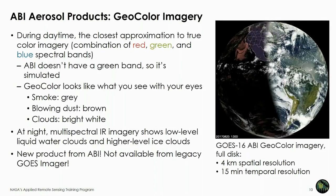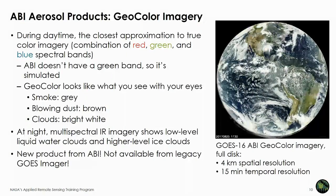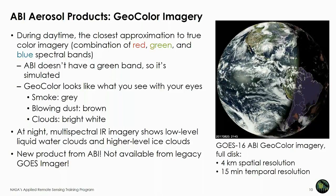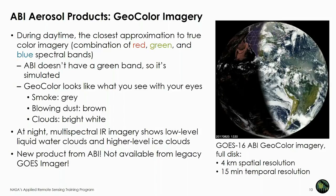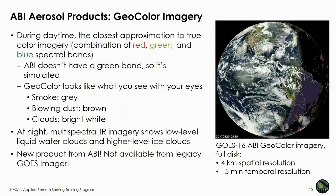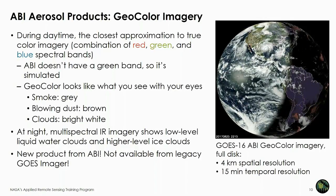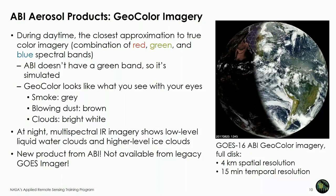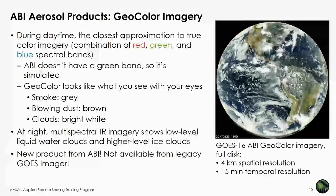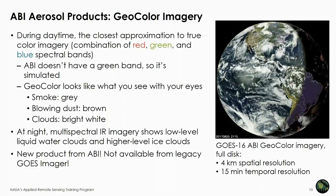Here's an example of GOES-16 ABI geocolor imagery from August 25th, 2017, with four kilometer spatial resolution and 15-minute temporal resolution — a new product from the ABI we didn't have before. On this day, Hurricane Harvey is approaching the Texas coast, and there are also some smoke plumes in central and eastern Canada moving southward as a grayish feature. At night, multispectral infrared imagery shows low-level liquid water clouds and high-level ice clouds; when the terminator moves you can see a peachy feature representing clouds during nighttime imagery.